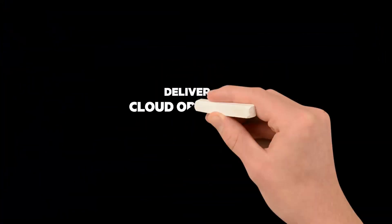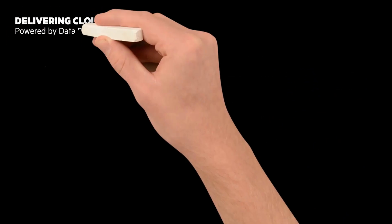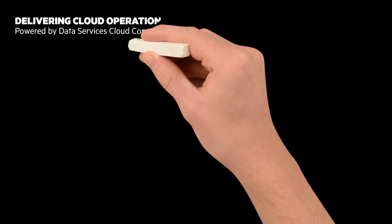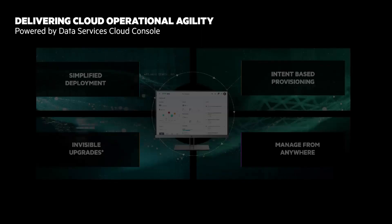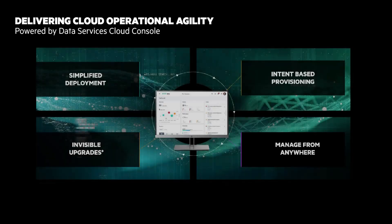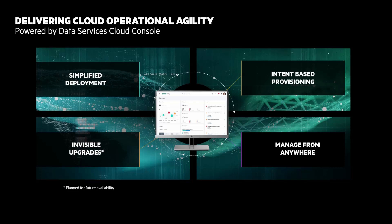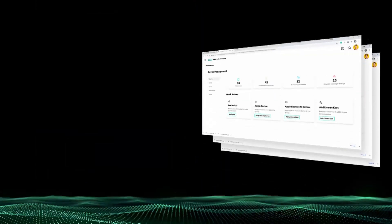I want to spend the last part of this focusing on how Data Services Cloud Console delivers cloud operations. It delivers this cloud-everywhere experience by separating the infrastructure control plane from the underlying hardware and moving it to the cloud. There are four qualities we'll look at: simplified deployment, intent-based provisioning, invisible upgrades, and managed from anywhere.